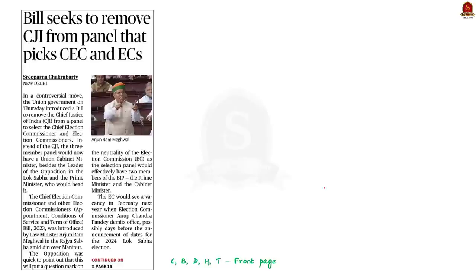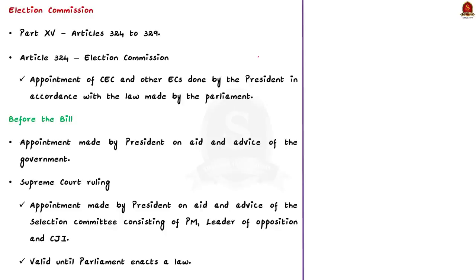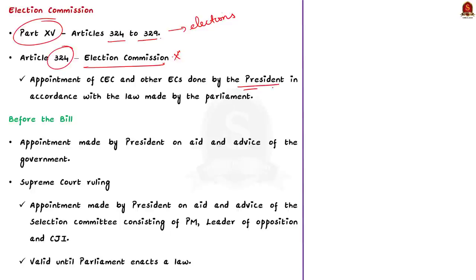Let us move to our next topic. Yesterday, the government of India introduced the Chief Election Commissioner and Other Election Commissioners' Bill in Rajya Sabha. The article highlights the issues with the bill. Part 15 of the Constitution, which includes Articles 324 to 329, deals with elections. Article 324 deals with the election commission, stating that the Chief Election Commissioner and other election commissioners can be appointed by the President, but this must be done in accordance with the law made by Parliament. Until now, Parliament had not made any law in this regard, so the CEC and other election commissioners were appointed by the President based on the recommendation of the central government.